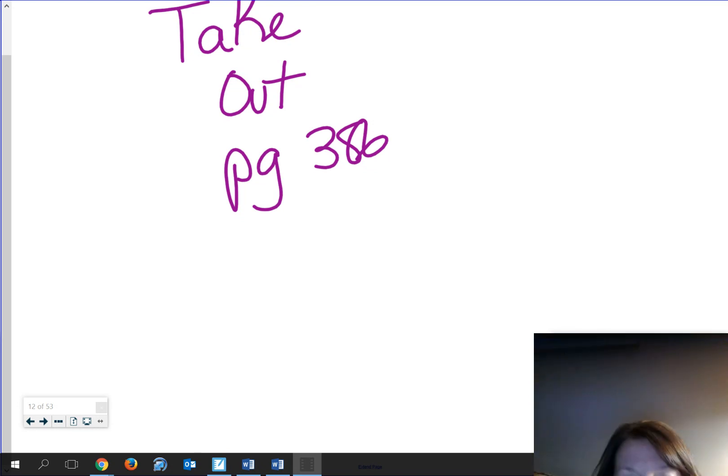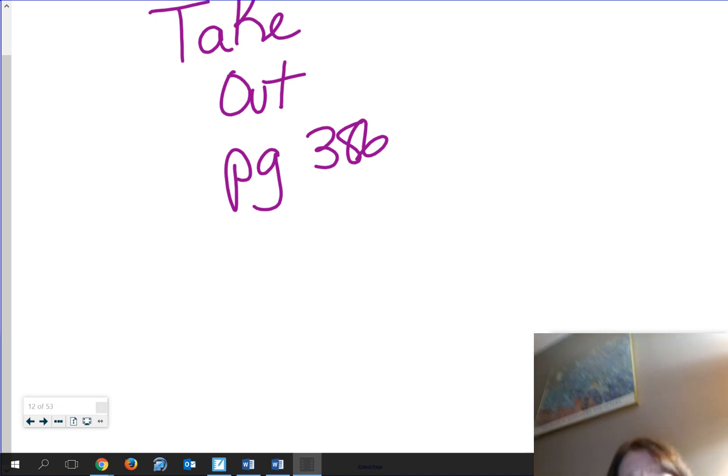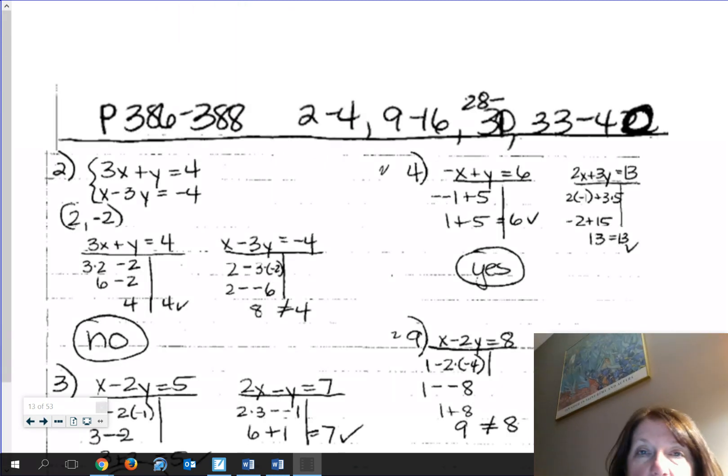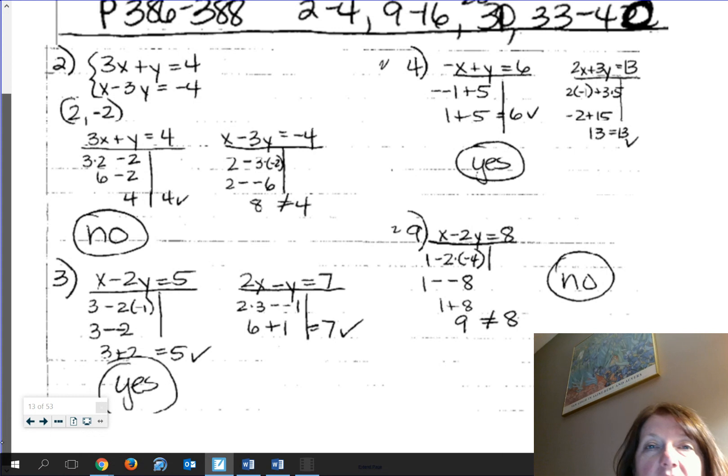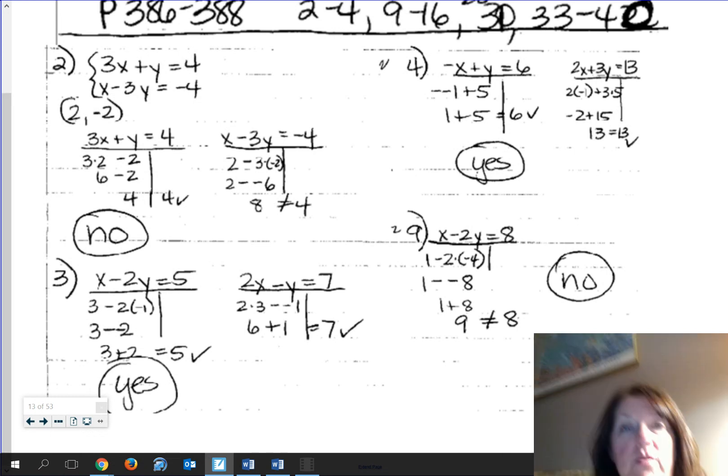It becomes really obvious when you are trying to shortcut things and it just catches up with you. So don't worry about saving paper. You got lots of paper. Alrighty, so here we go. Starting with these first ones, this is where you just simply have to verify is this point a solution of both of these equations?